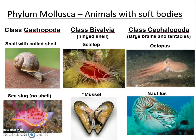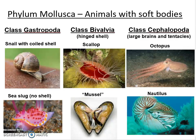Mollusca is the second largest phylum of invertebrate animals, with more than 75,000 recognized species — a lot of variety. Looking at the fossil record, you can find an equivalent amount — another roughly 75,000 species of molluscs for which we have fossil evidence, that have either gone extinct or evolved into new types of animals.